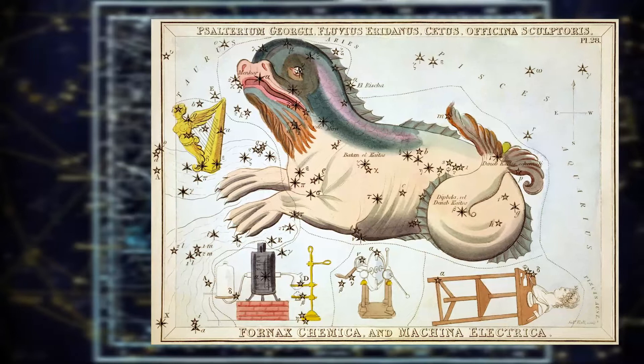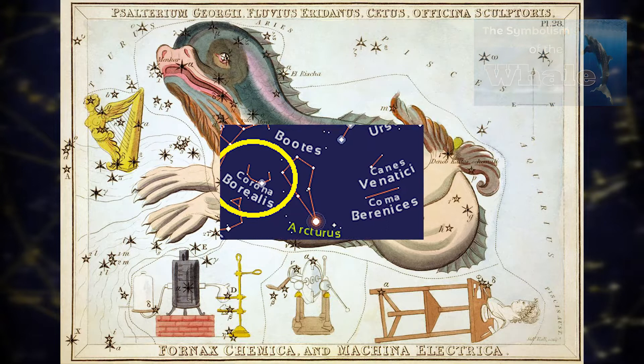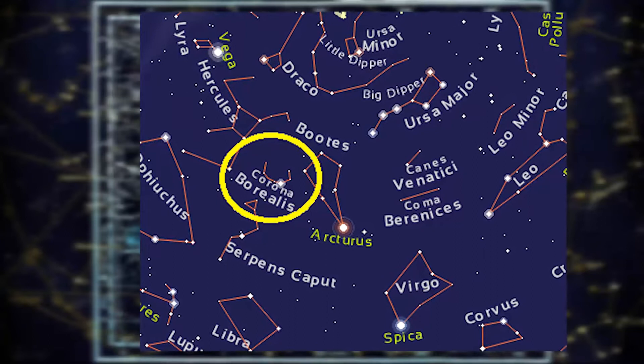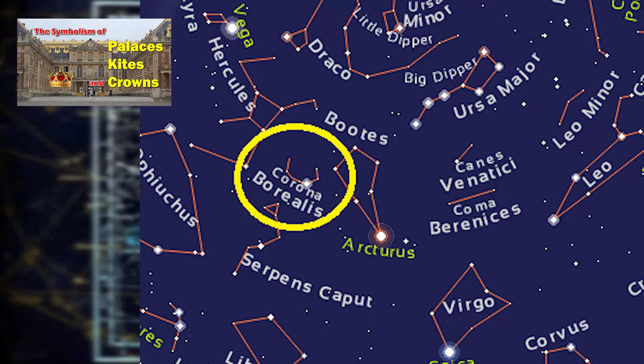Cetus, the whale in English. Cetus was a sea monster in Greek mythology. We have a video on the symbolism of the whale in the playlist. Corona Borealis and Corona Australis — the Crown. We have a video that mentions this constellation: The Symbolism of Palaces, Kites and Crowns.